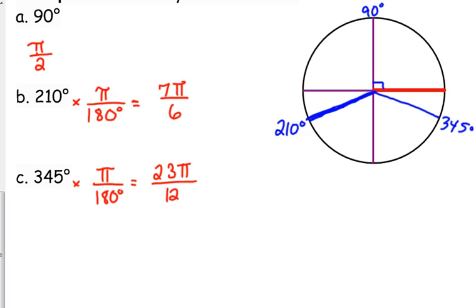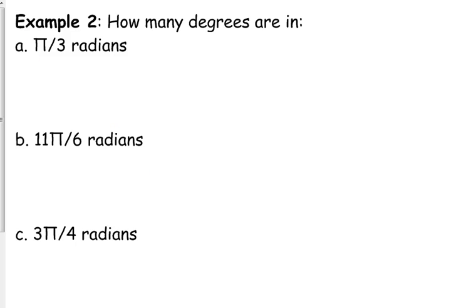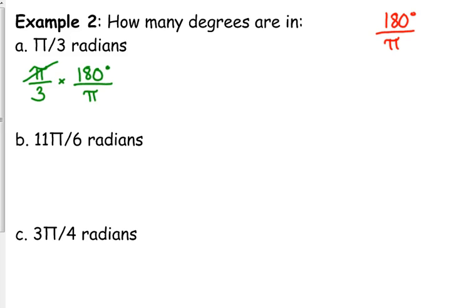We can have negative angles, but we'll talk about that in a few minutes. Now let's go from radians to degrees — we flip the relationship. We want degrees, so 180 goes on top and pi goes on the bottom. For π over 3 radians, multiply by 180 over pi — the pi cancels, and 180 divided by 3 is 60. So π over 3 radians is equivalent to 60 degrees.